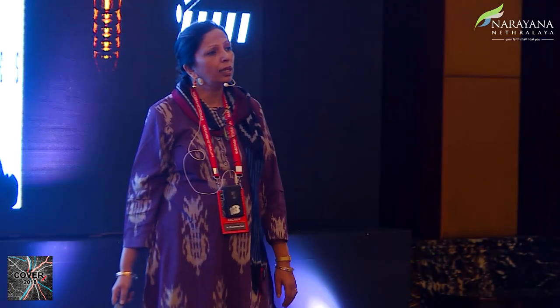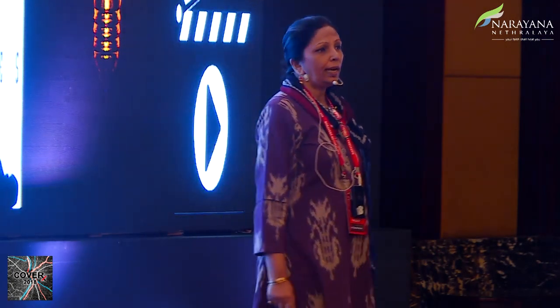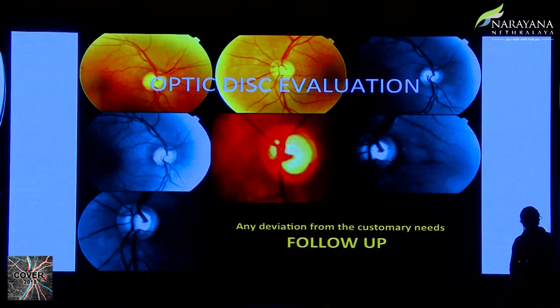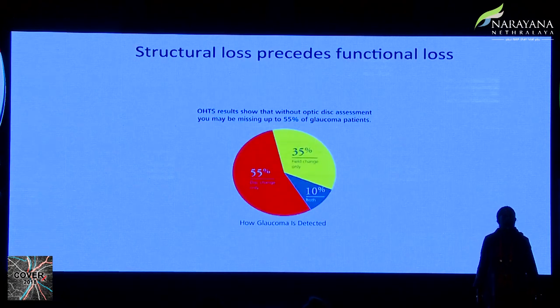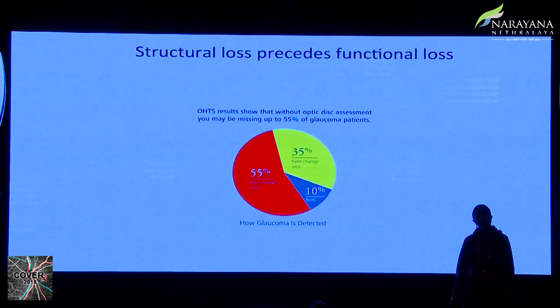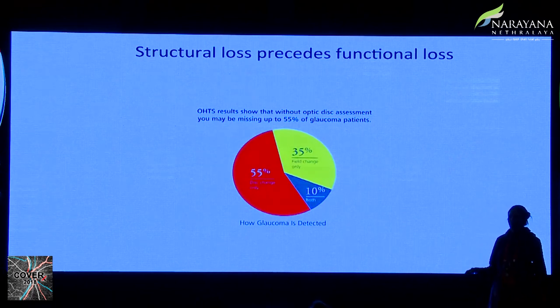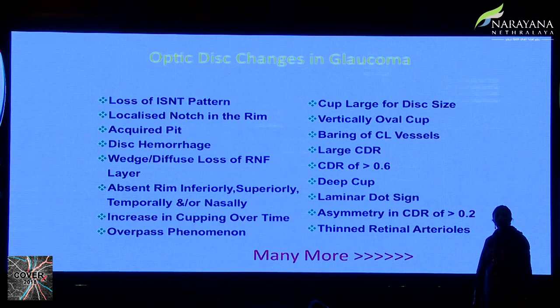Family history is very important — those with a positive family history of glaucoma who are glaucoma suspects definitely need to be followed up. Coming to optic disc evaluation, which is perhaps the most important aspect of diagnosing glaucoma clinically: structural loss precedes functional loss, and if you do not examine the disc carefully, you could miss 55% of your patients.